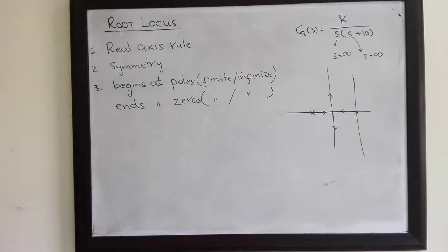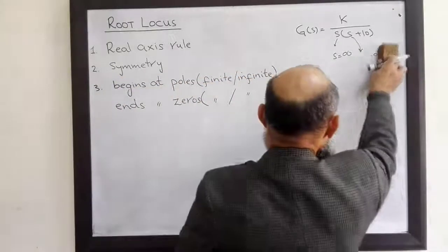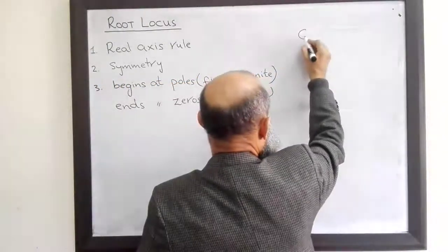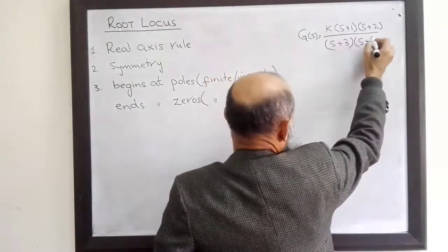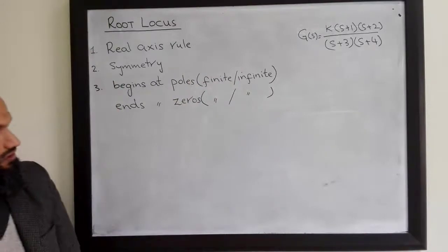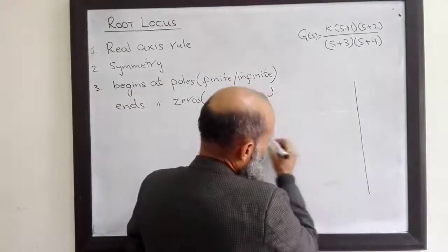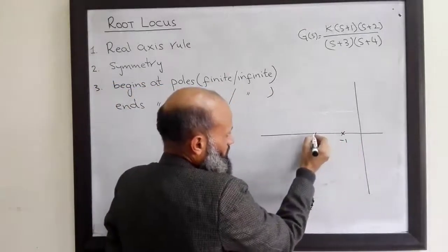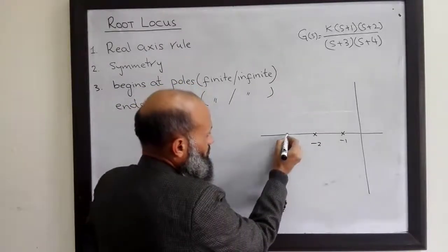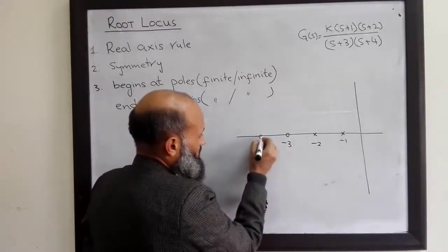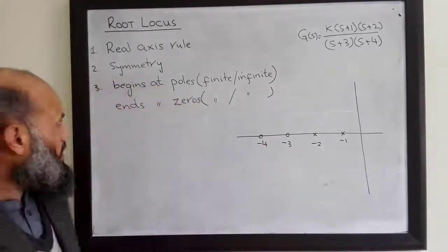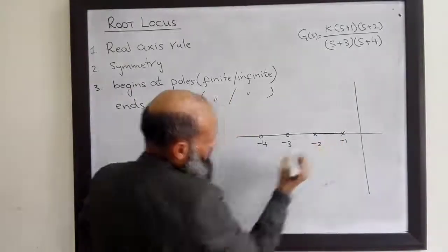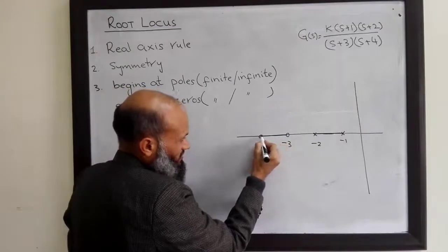As another example to demonstrate this rule, consider a closed-loop system with a forward transfer function. We locate the poles and zeros in the s-plane. A pole is at s = -1, another pole at s = -2, a zero at s = -3, and another zero at s = -4.